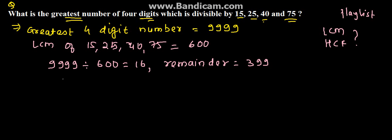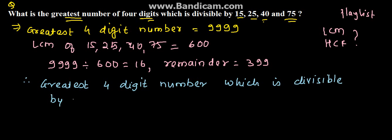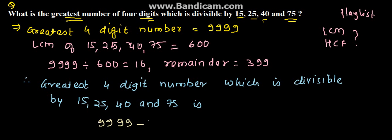From this we can say that the greatest 4-digit number which is divisible by 15, 25, 40 and 75 is 9999 minus the remainder 399, which is equal to 9600. Therefore, the required number is 9600, which is the solution for the given problem.